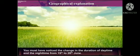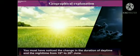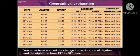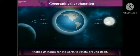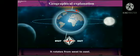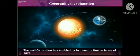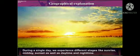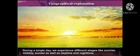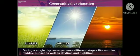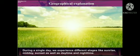Geographical explanation. You must have noticed the change in the duration of daytime and nighttime from 19th to 28th June. It takes 24 hours for the earth to rotate around itself. It rotates from west to east. The earth's rotation has enabled us to measure time in terms of days. During a single day, we experience different stages like sunrise, midday, sunset, as well as daytime and nighttime.